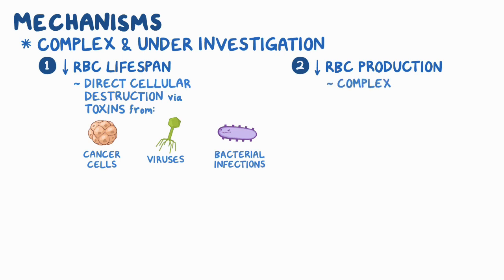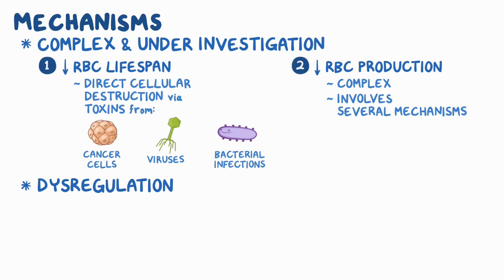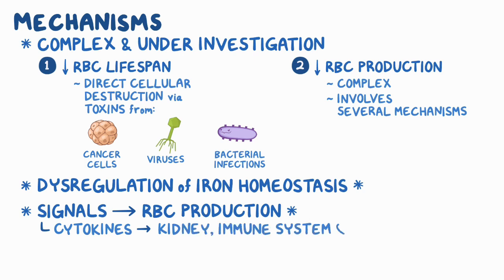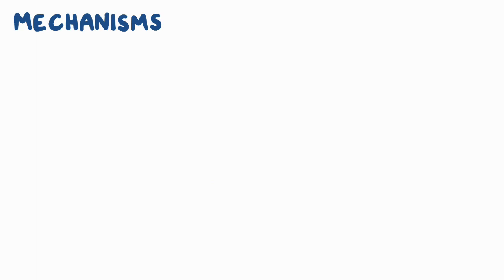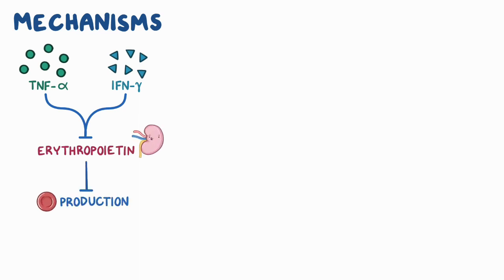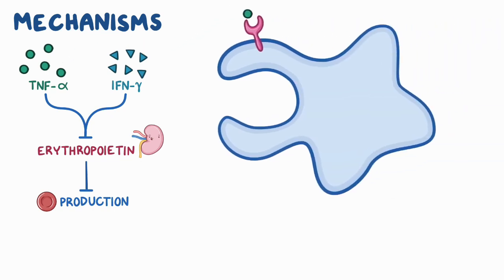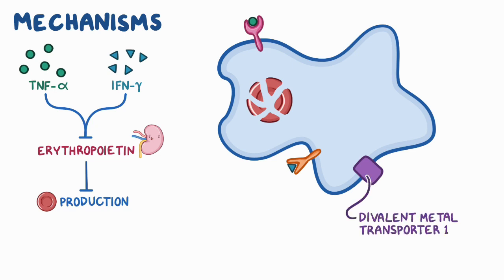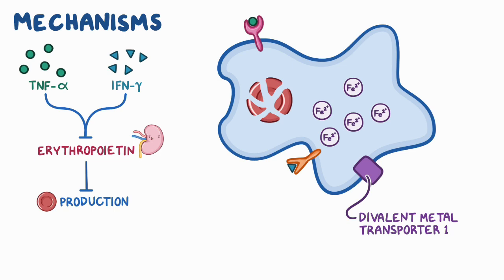Decreased RBC production is a bit more complex and involves several mechanisms. The most important one, and the one that most researchers agree upon, involves dysregulation of iron homeostasis and the signals that control RBC production. In chronic disease states, chemical messengers called cytokines mediate this pathologic process in the kidney, immune system, and the GI tract. Two cytokines called tumor necrosis factor alpha and interferon gamma inhibit the production of erythropoietin in the kidney, which subsequently prevents RBC production in the bone marrow. Additionally, tumor necrosis factor alpha promotes RBC degradation in macrophages via phagocytosis, and interferon gamma increases the expression of a protein channel called divalent metal transporter 1 on the surface of macrophages. This channel serves as a pathway for iron to enter the macrophage at increased rates, so less iron is available for the production of hemoglobin.